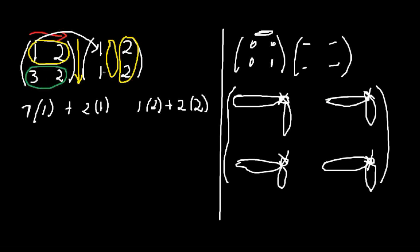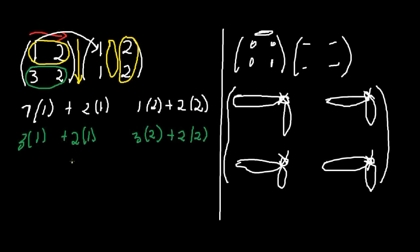Continuing with our example, we place the second matrix at the center. We compute: three times one plus two times one gives us five, and three times two plus two times two gives us ten. Then one times two plus two plus four gives six, and six plus four gives ten. So our final result matrix is three, six, five, ten.